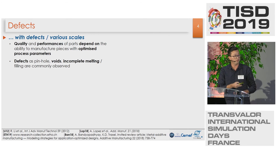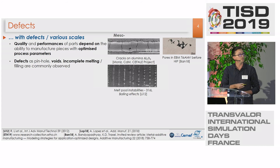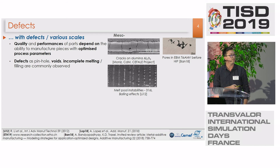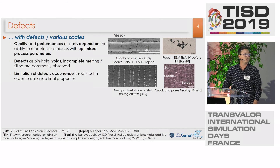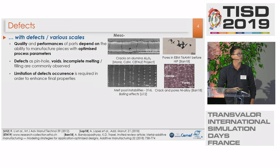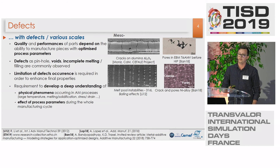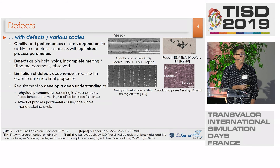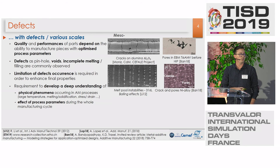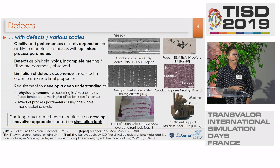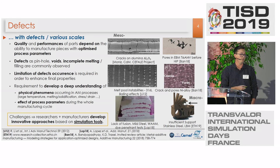Indeed, we know that voids, cracks, or melt pool instabilities can occur during the process, and the limitation of these defect occurrences is essential to enhance good mechanical properties of the final parts. That is the reason why it seems really essential to get a better understanding of all the physical phenomena that occur during the process — for example, large temperature gradients, quick melting and solidification, residual stresses, or vaporization phenomena. That's why researchers and manufacturers are really interested in developing innovative approaches based on numerical simulation tools.